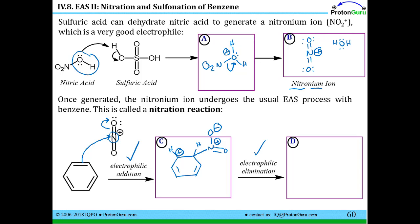That is the electrophilic addition step that all electrophilic aromatic substitution processes show. The second step is electrophilic elimination — you eliminate the H from the carbon that has four bonds to re-establish the double bond and regain aromatic stability. The net result is that the NO2 group has substituted for one of the hydrogens. This nitro group was first introduced in our nomenclature of monosubstituted benzene lessons.